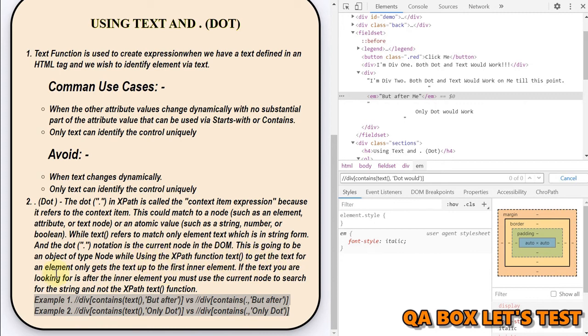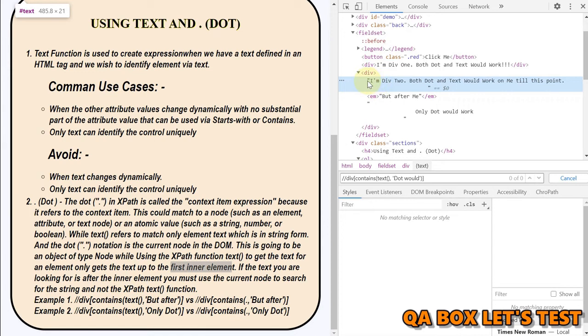So XPath function text to get the text for the element only gets a text up to the first inner element. So in this case, any text in this can be found using the text, but you can't find text within the elements. And after the elements, if the text you are looking for is after the inner element, so this is our inner element. So the text function cannot identify the text between this, it can only identify the text between this and this provided there are no other internal elements. So in this particular case, we saw that both text and dot gave us the same result. But in this particular case, text can only identify this div node using this text only.